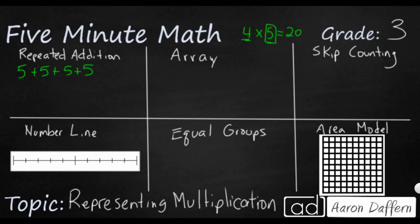If I wanted to, I could flip that. The commutative property, or the order property, lets me know that I can flip the order of the factors and still get the same answer. So five times four is the same as four times five. Multiplication is like addition — you can flip the factors just like you can flip the add-ons.